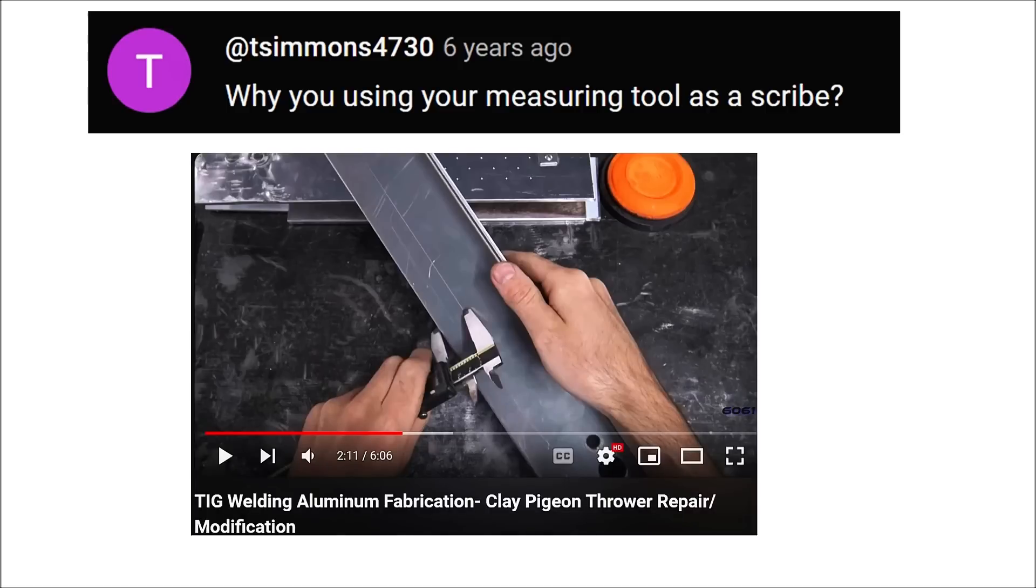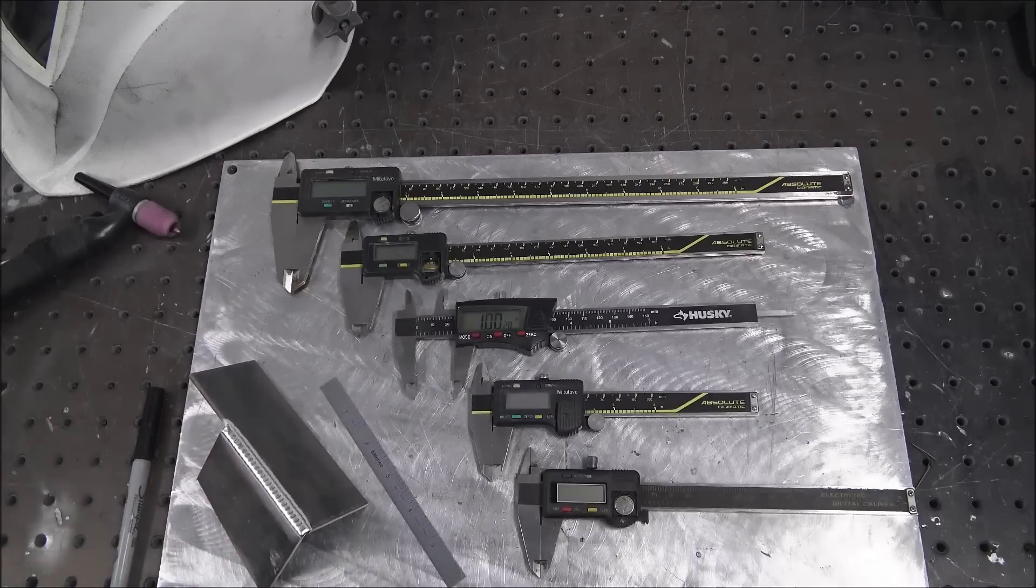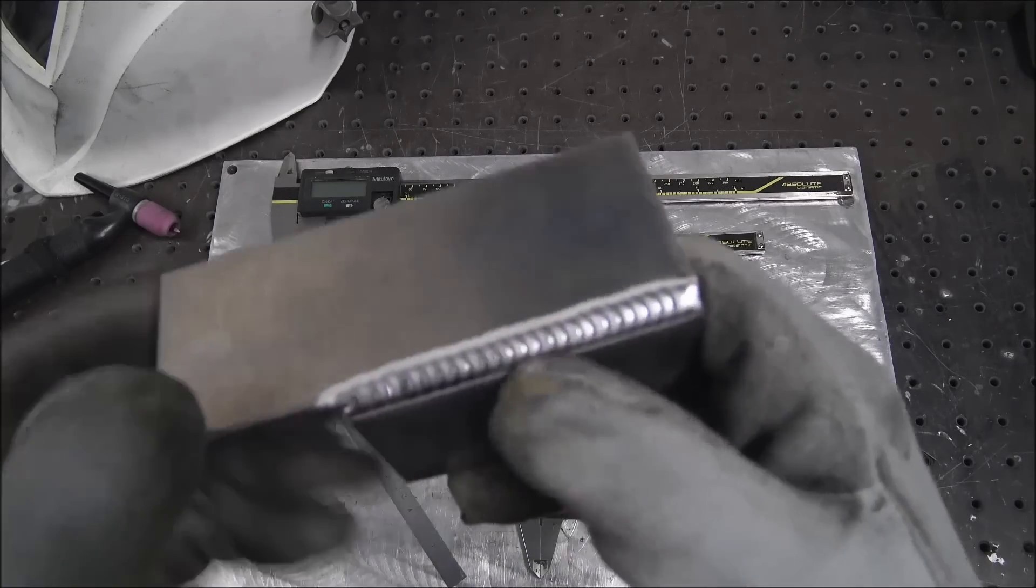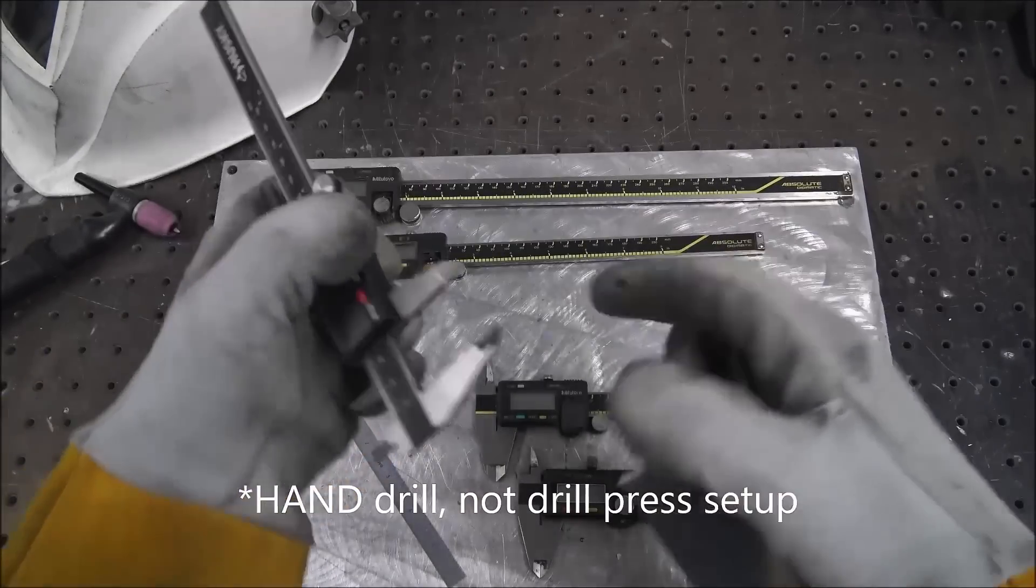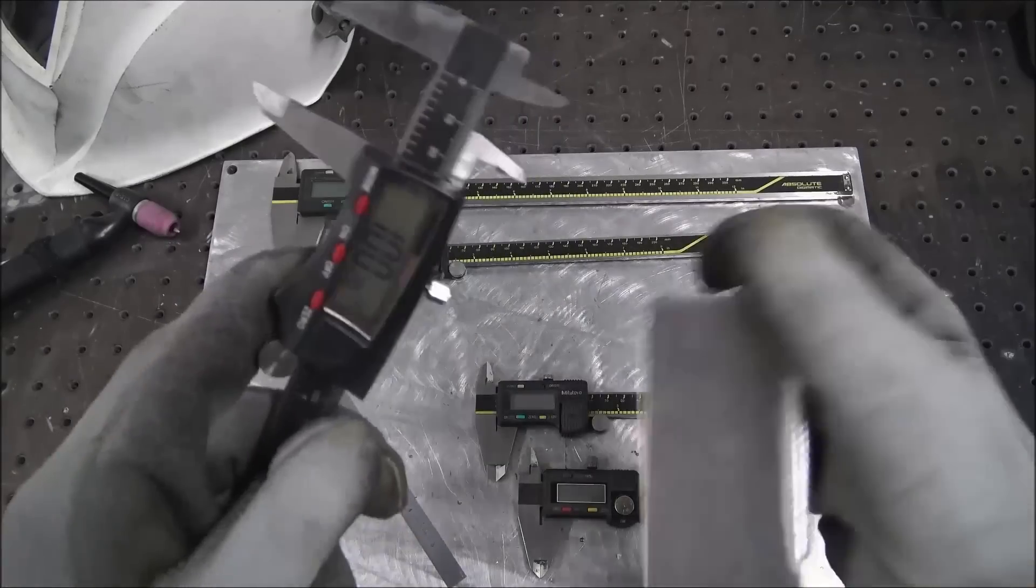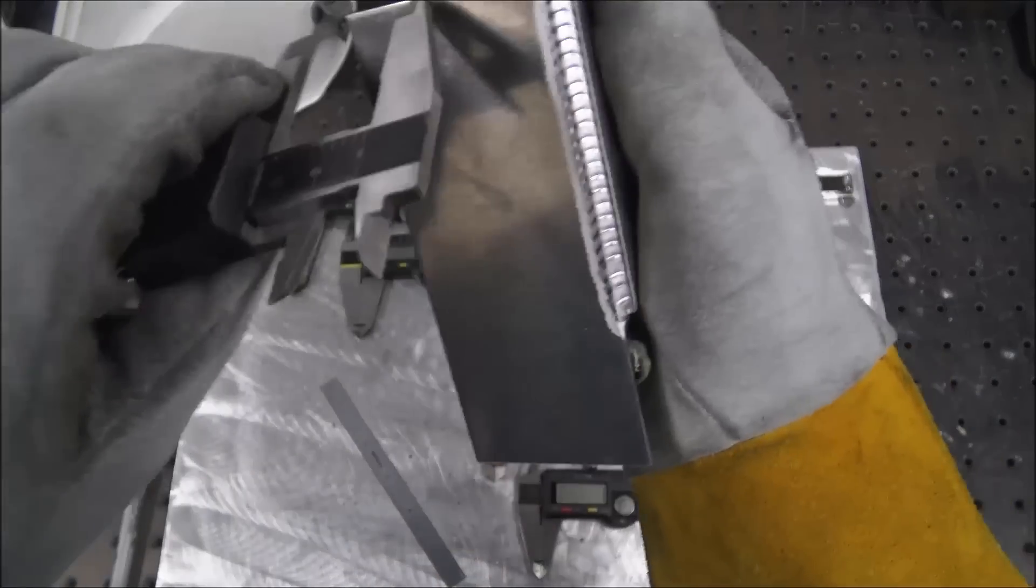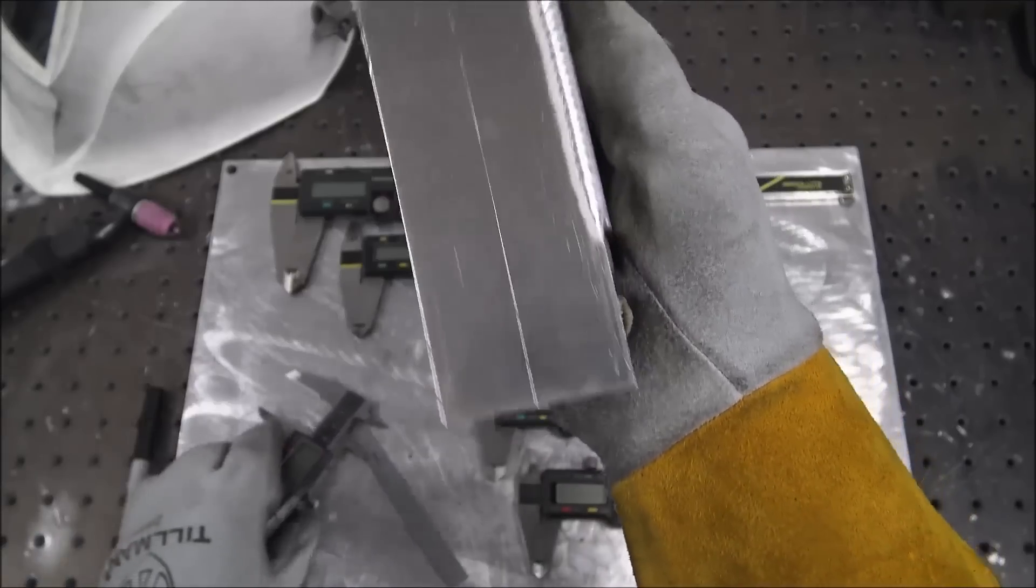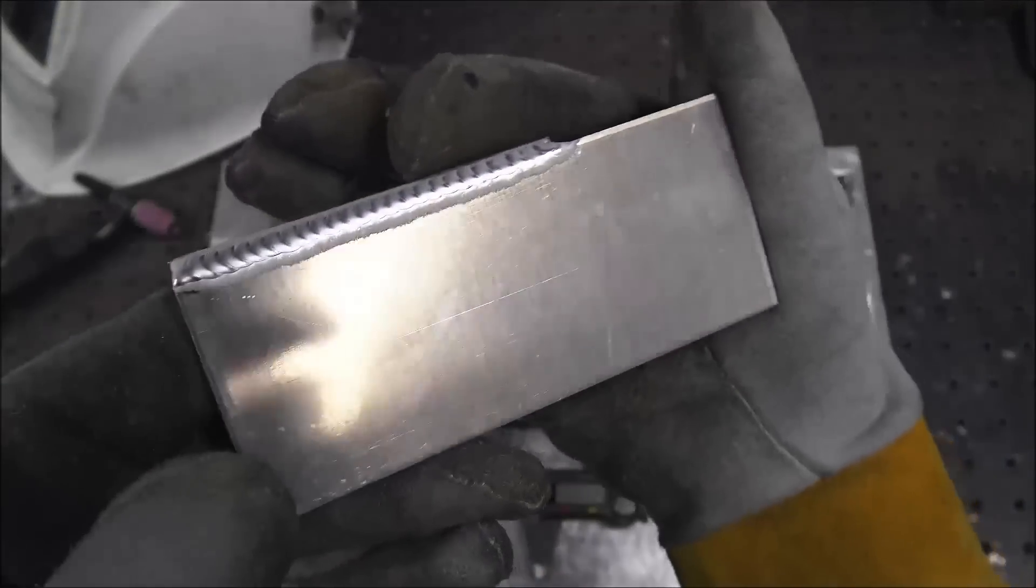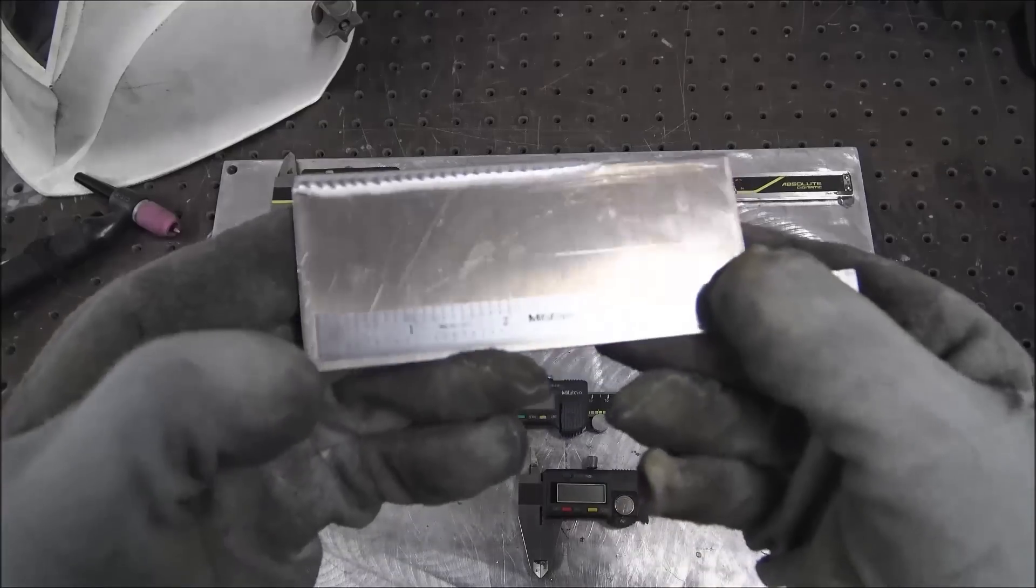Why are you using your measuring tool as a scribe? Let's say you want to drill a bunch of holes one inch in from the edge. The quickest way I can think of to do it is get your caliper, set them at an inch, lock them, and just drag a line like that, and then you can measure out your spacing.